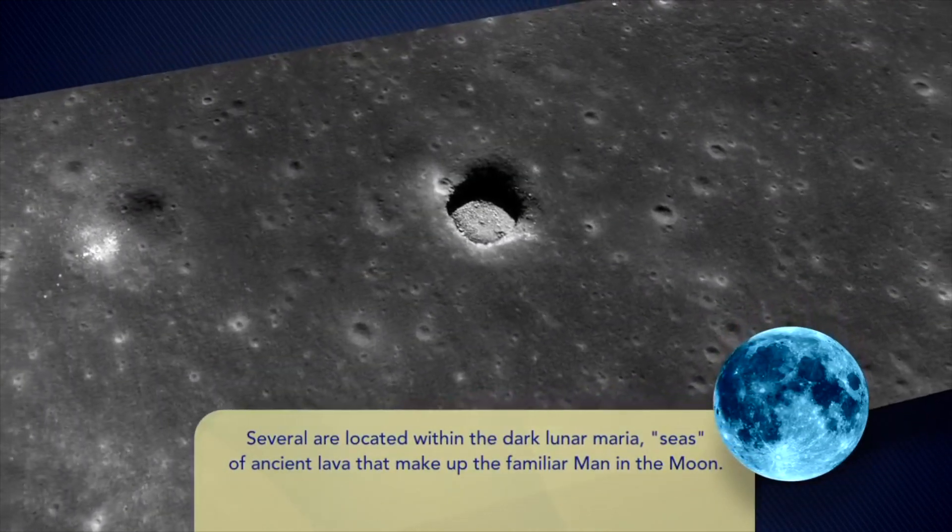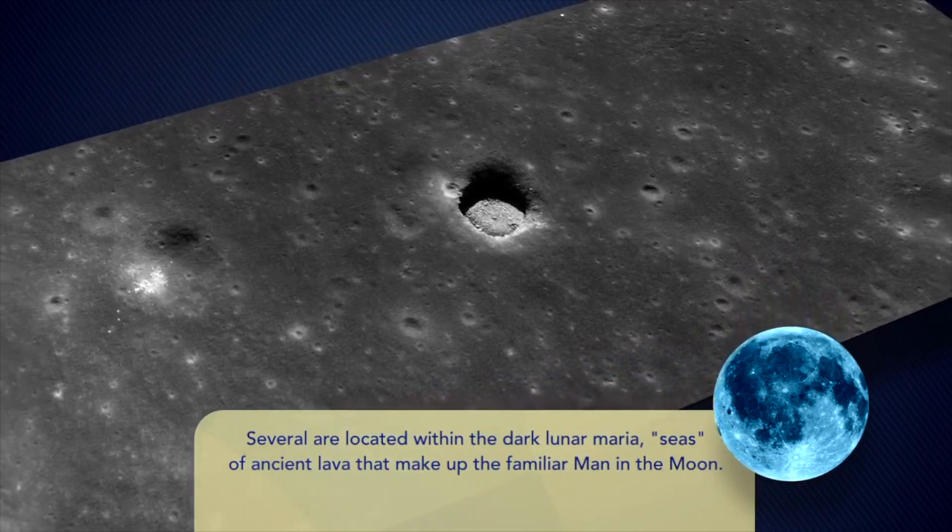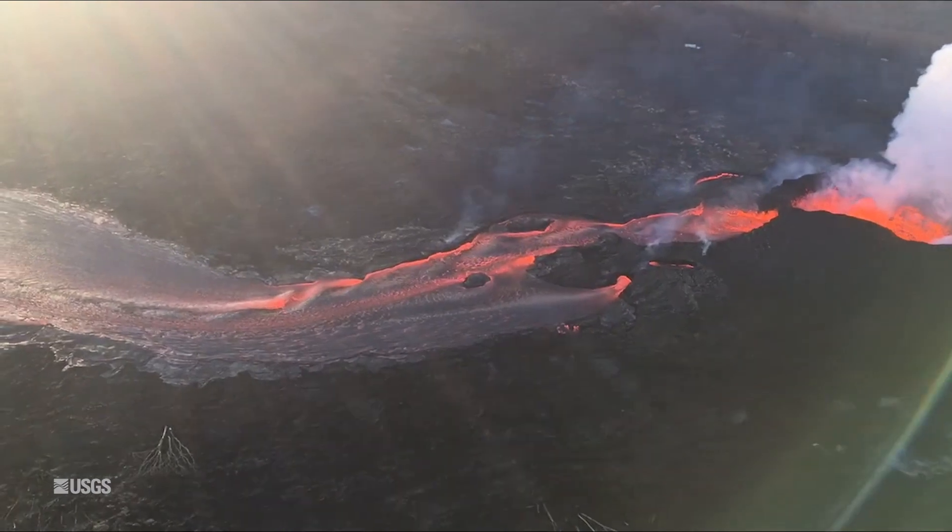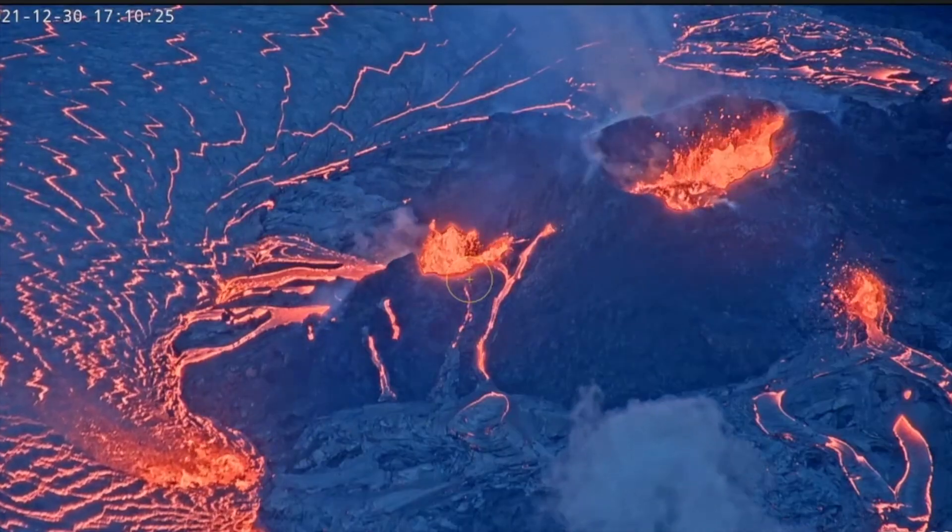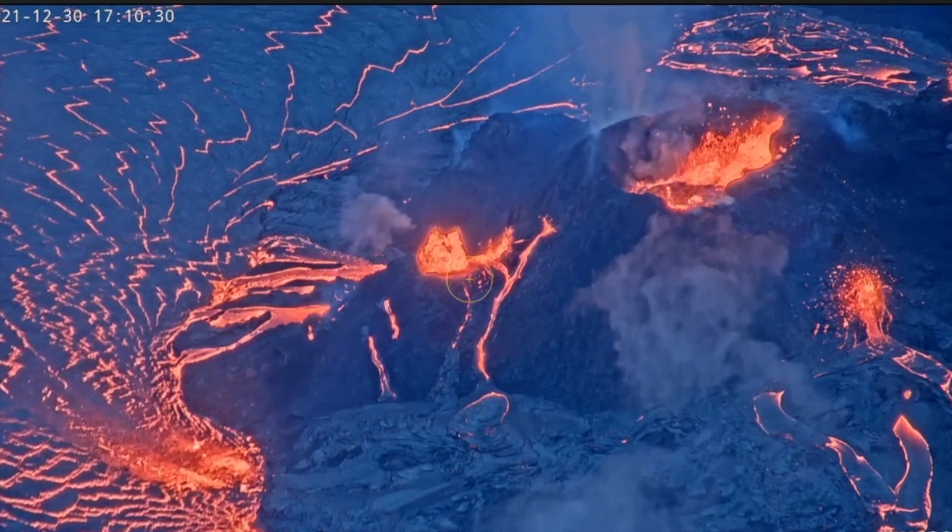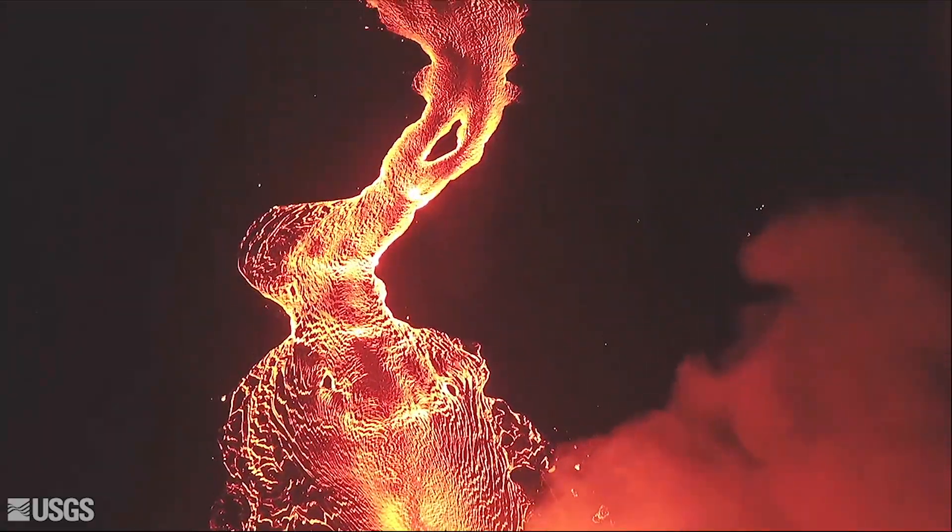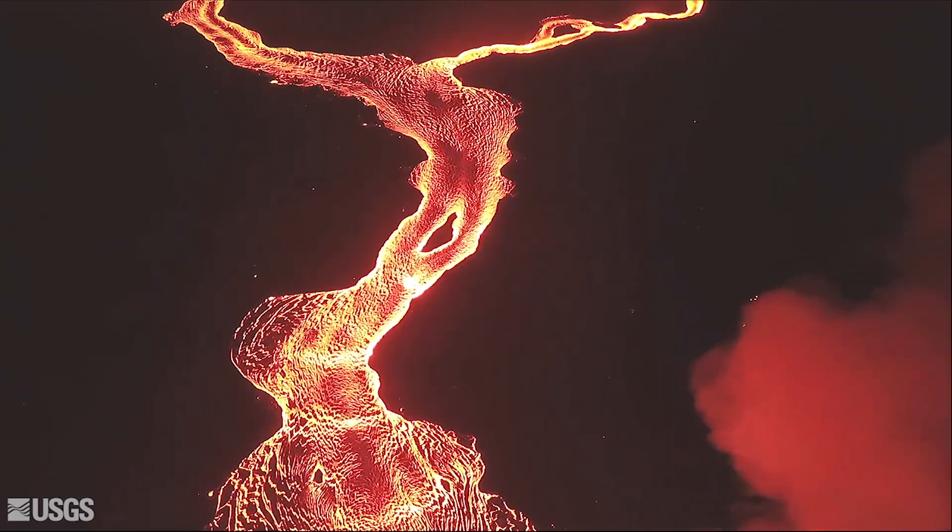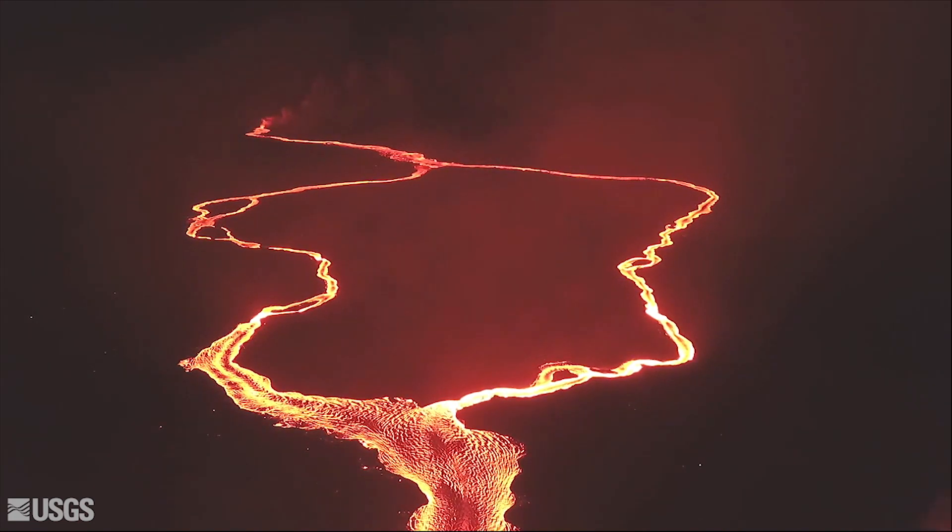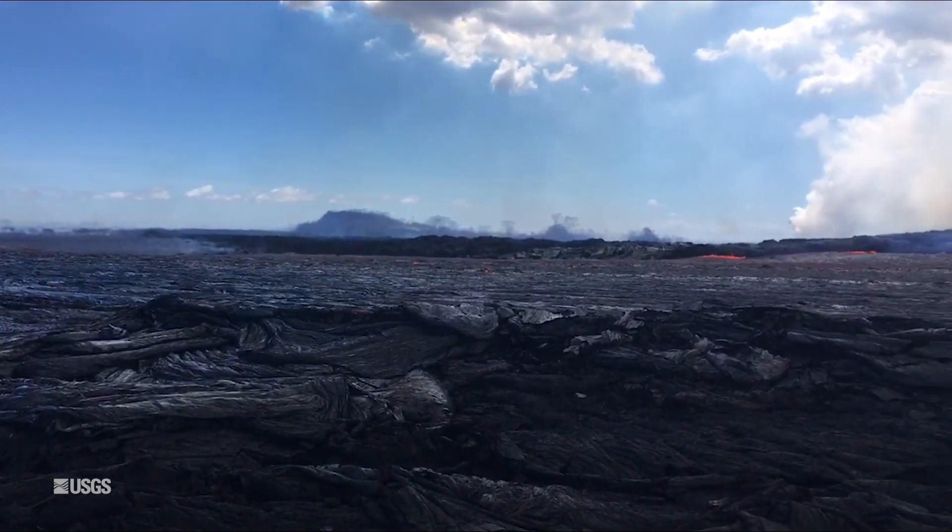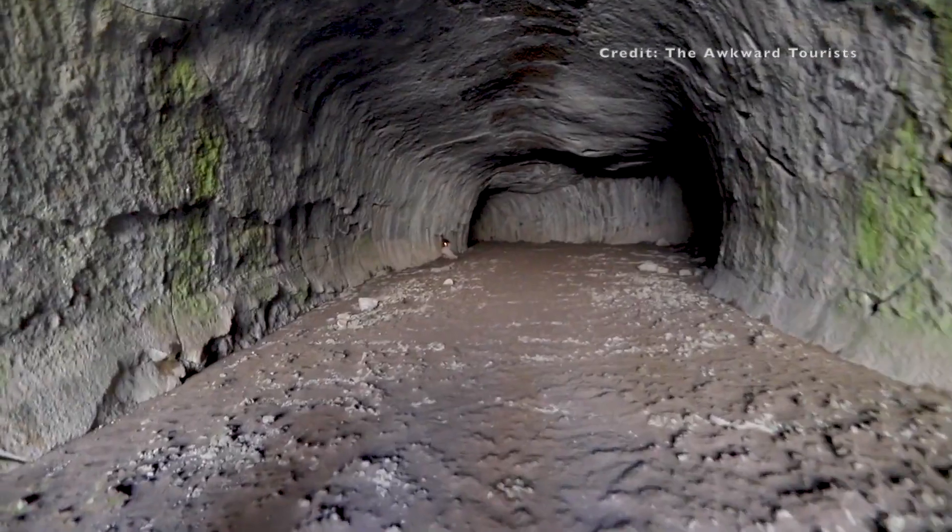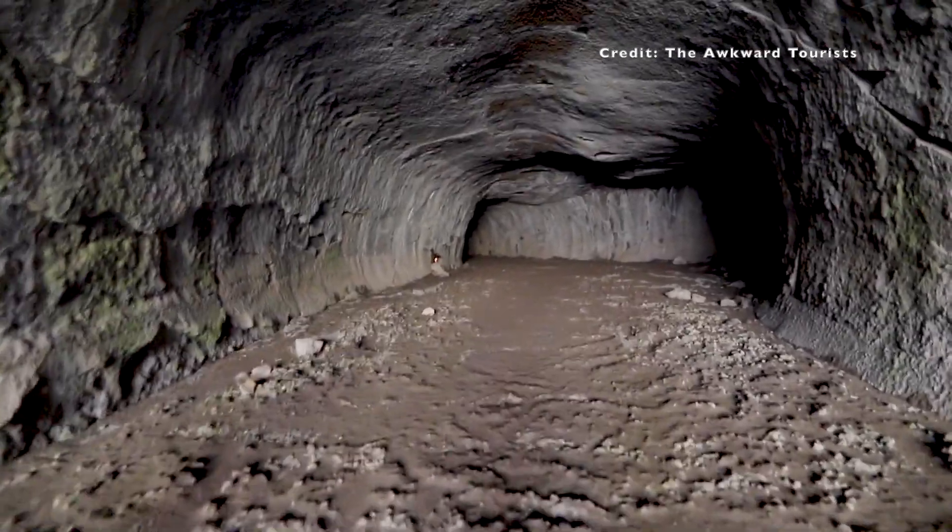To understand lunar lava tubes, we don't have to go very far. Here on Earth, scientists can observe how lava tubes form. When lava reaches the surface through a vent or an eruption, it follows gravity and the path of least resistance, just like water. As it flows, the surface of this river of lava hardens, forming an outer crust as the lava continues to flow underneath. If the lava inside the tube drains out, what's left is an empty cavity.